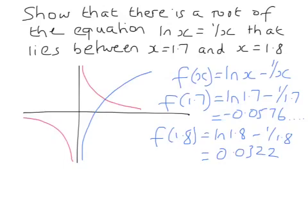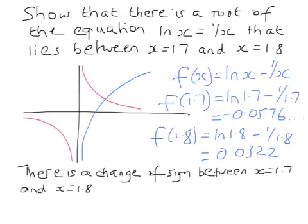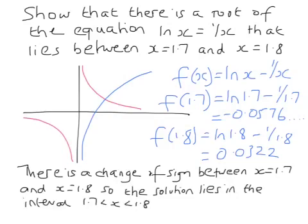So in other words, at 1.8 the ln graph is bigger, and at 1.7 the 1 over x graph is bigger. You might think that's enough, and it sort of is, but you do need to be careful about what you write next — writing out the correct words is what they're looking for in the exam. Writing out that there's a change of sign between x equals 1.7 and x equals 1.8 is the reason for stating that the solution lies between those values. The solution lies in the interval 1.7 < x < 1.8. This is easy to forget, but you will lose a mark in your exam if you fail to put that sentence in at the end.